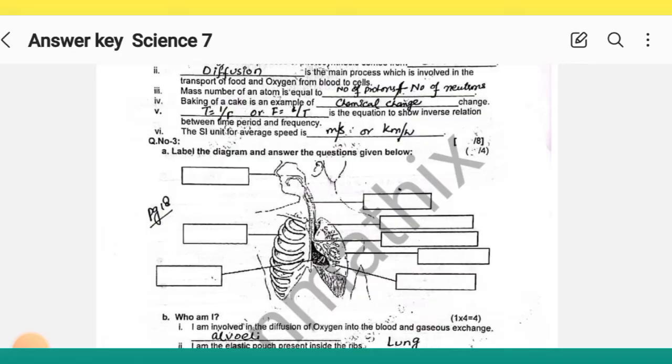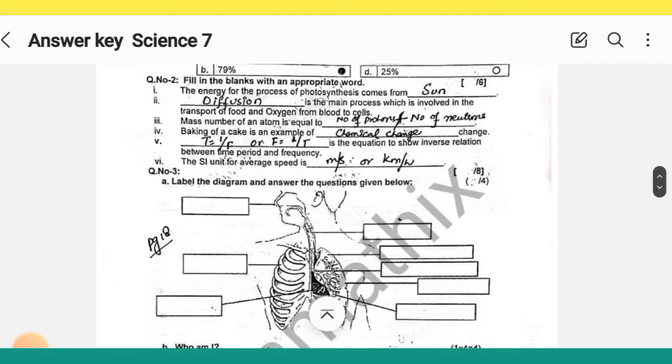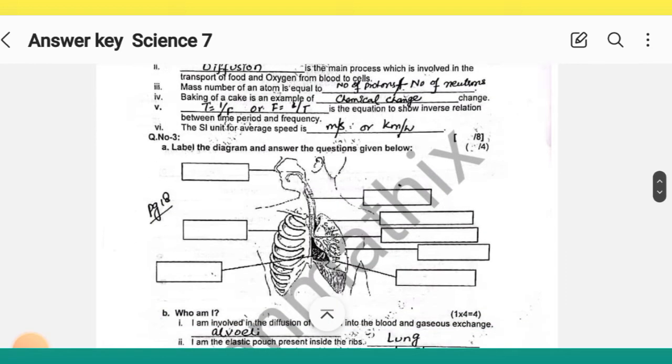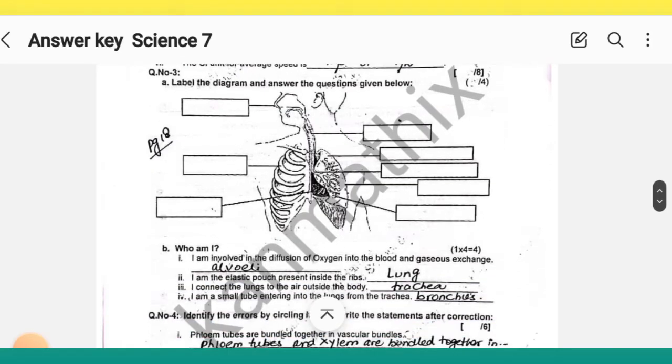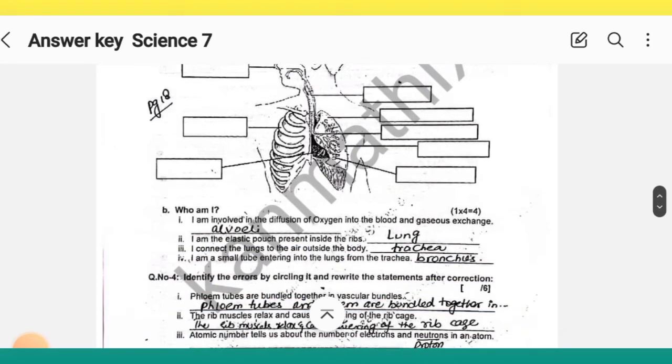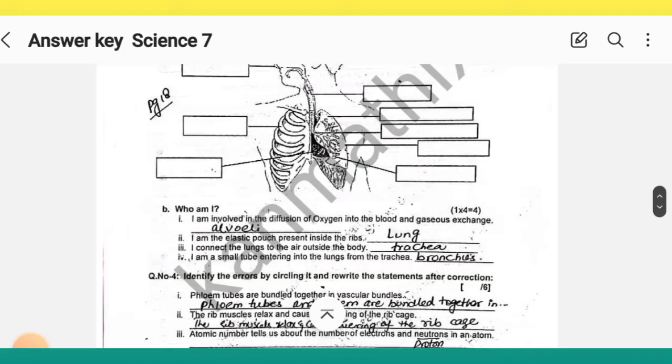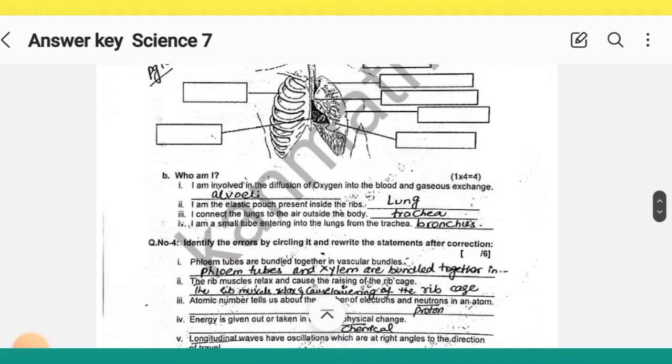This diagram is taken from page number 18, so you can check out the labeling. Then in part B, who am I? The correct answers are given.